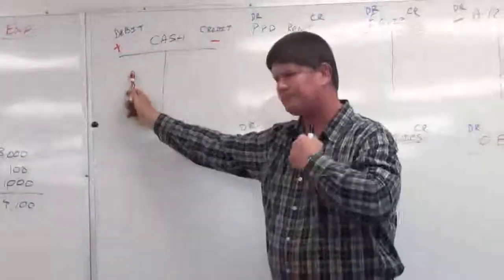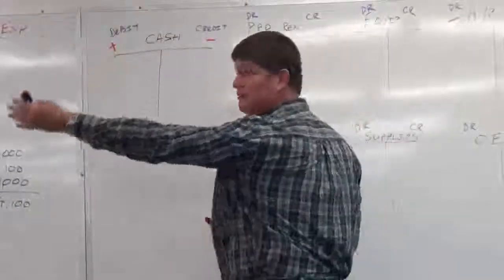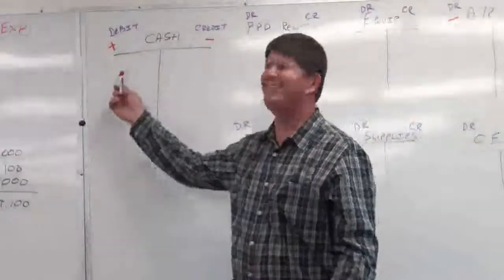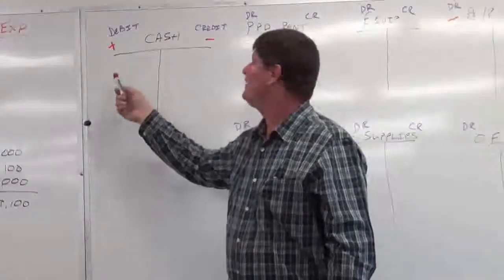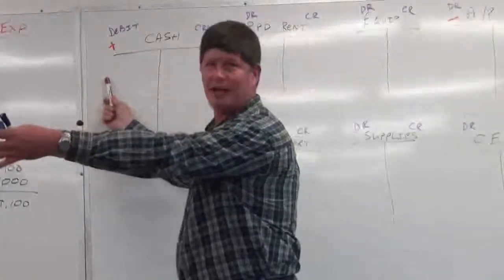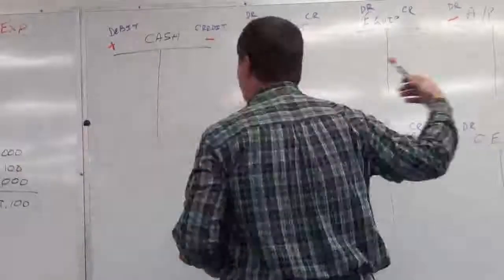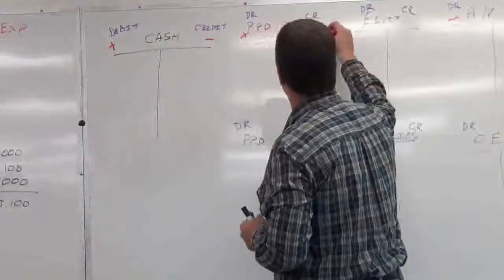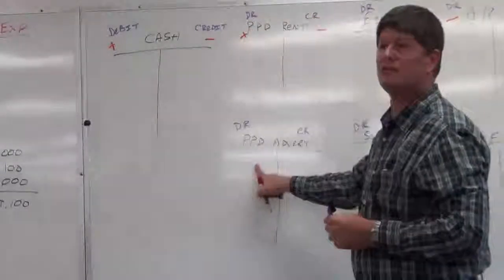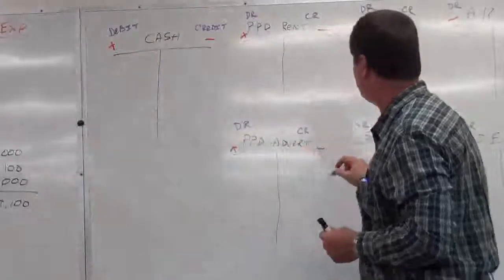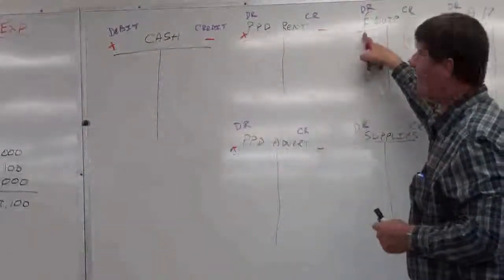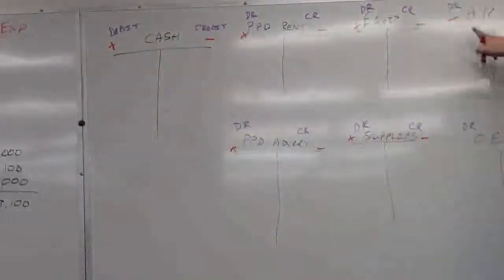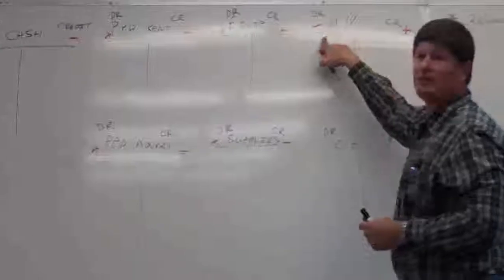An asset account — cash increases on the debit side, decreases on the credit side. Prepaid rent is an asset — increases on the debit side, decreases on the credit side. Prepaid advertising is an asset — increases debit, decreases credit. Equipment: asset, increases debit, decreases credit. Supplies: asset, increases debit, decreases credit. Accounts payable: liability — decreases debit, increases credit.